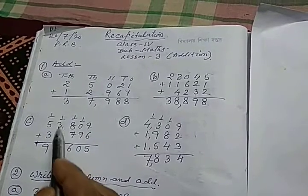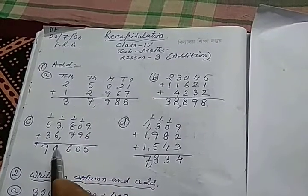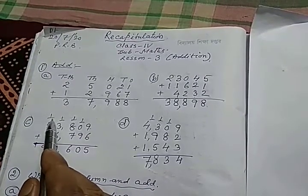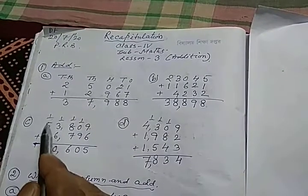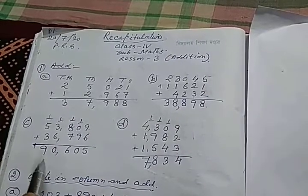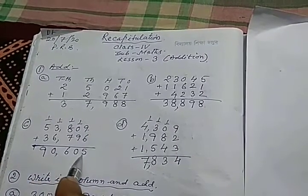3, 1, 6, 6 and 4 is 10. 0 is written and again 1 is carry. 5, 1, 6, 6, 3, 9. So we have the result 90,605.